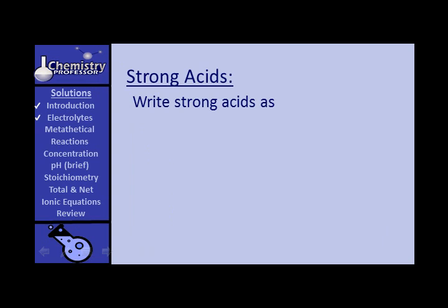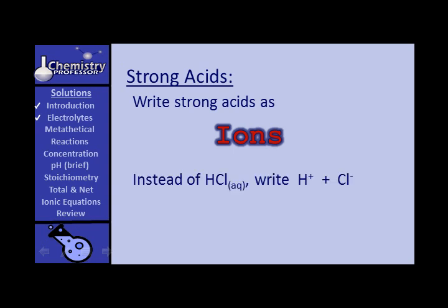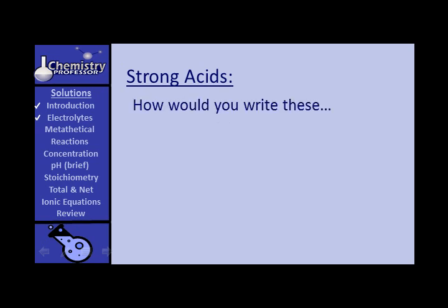When we write these strong acids in solution, we should write them the way they appear predominantly — as ions. Therefore, instead of writing HCl(aq), write hydrogen ions and chloride ions. Actually, it's more correct to write them as hydronium ions and chloride ions, because the hydrogen ion bonds to the water molecule producing the hydronium ion. For example, HBr, as a strong acid, should properly be written as either hydrogen ions and bromide ions, or hydronium ions and bromide ions.